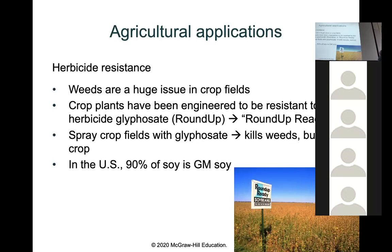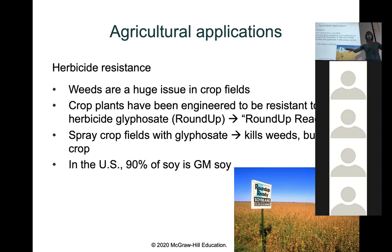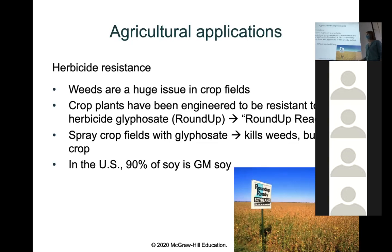Another application in agriculture is herbicide resistant crops. If you spray an herbicide on a crop field, it could also kill the crop itself. Weeds are a major issue — they shade out crops and take nutrients. They've created crop plants resistant to herbicide, so you can spray it over the whole field, kill only the weeds, and leave the soybeans unharmed. The most popular version is called Roundup Ready.